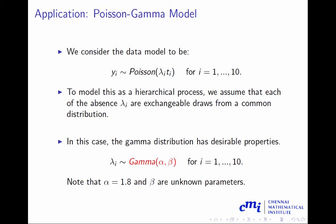Now go back to this application. Consider the data model y_i as Poisson(lambda_i * t_i). To model this as a hierarchical process, we assume that each of the lambdas, lambda_i, are exchangeable draws from a common distribution. In this case, the gamma distribution has desirable properties, so lambda_i follows gamma(alpha, beta). We have taken alpha equal to 1.8. For the time being, we are just assuming the alpha value is 1.8. We will talk about how we came up with alpha value 1.8, but for now just assume alpha is known at 1.8, and beta is an unknown parameter.